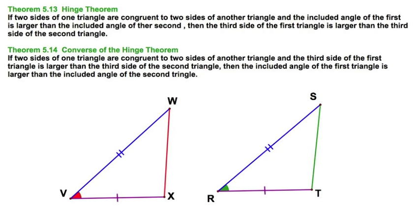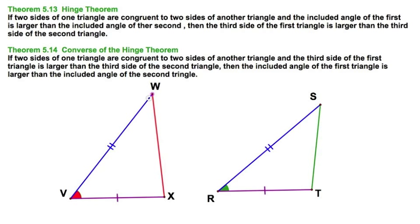You've got the blue segments congruent. You've got the purples congruent. Now, if these two angles were congruent, then we'd have side-angle-side. But we don't — we have an inequality. And it's very simple. As long as we've got that two pair of matching sides, blue and purple here, I open this up like this. Where the red angle is bigger than the green angle, then the red side is bigger than the green side.